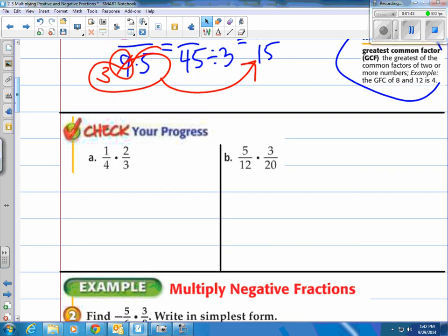Give it a shot on these two. Turn off, or pause your video and come on back when you're done with these two. All right, how do we do this 1/4 times 2/3? Well, multiply the tops, multiply the bottoms. That would be 2/12.